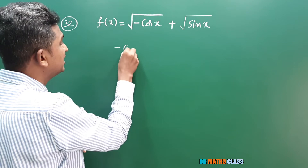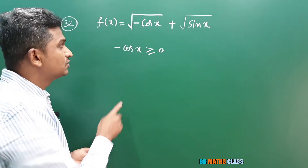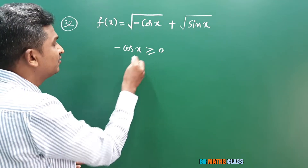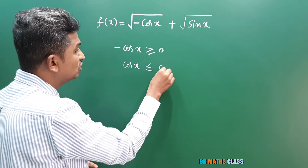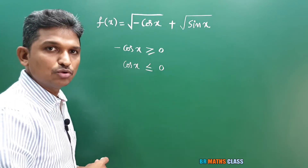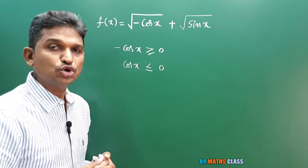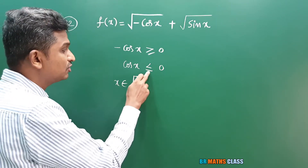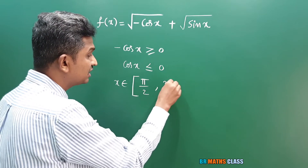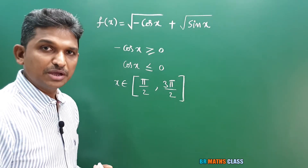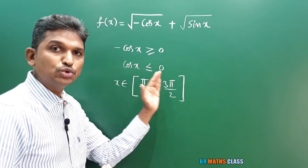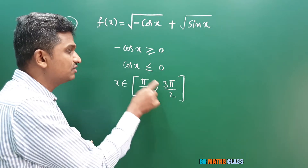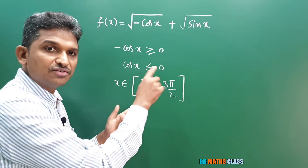The first function is under a square root, so the expression inside must be ≥ 0. After multiplying the inequality by −1 (which reverses the sign), we get cos x ≤ 0. Cos x is negative in the second and third quadrants. Because equality is included, x belongs to the closed interval [π/2, 3π/2]. We use closed brackets because cos(π/2) = 0 and cos(3π/2) = 0. So the domain of the first function is [π/2, 3π/2].